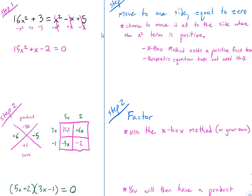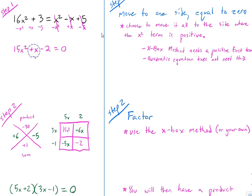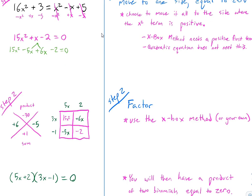So I get 15x squared minus 5x plus 6x minus 2 equals 0. The order of those two middle terms doesn't matter. Now I pull out the GCF of each pair: GCF of the first pair is 5x, GCF of the second pair is 2. Actually the GCF here is negative 1, and here 3. That gives me the factored version. I still keep equals 0 — this is still an equation.